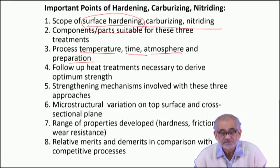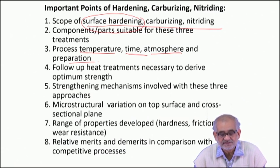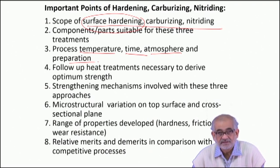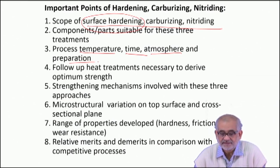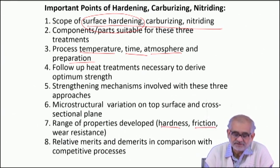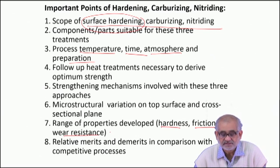There is no separate post-processing hardening treatment required for simple hardening, but carburizing does require one. The strengthening mechanism in hardening and carburizing is the same — martensitic hardening — but in nitriding it is different: it is the presence of nitrides. The microstructural variation from the top surface along the cross-sectional plane is a smooth gradation to be understood and developed carefully. The end aim is hardness, lowering of friction coefficient, improvement in wear resistance, and in some cases even corrosion resistance for nitriding.